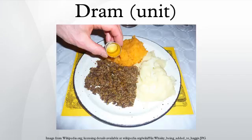The dram was originally both a coin and a weight in ancient Greece. It refers to a unit of mass in the avoirdupois system, and both a unit of mass and a unit of volume in the apothecary system. The unit of volume is more correctly called a fluid dram.